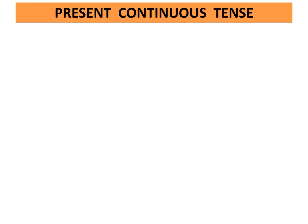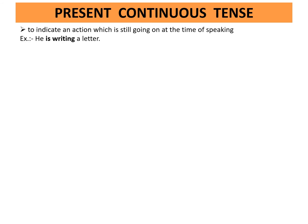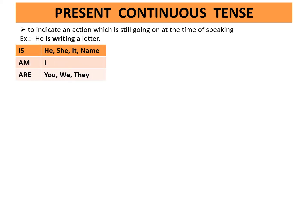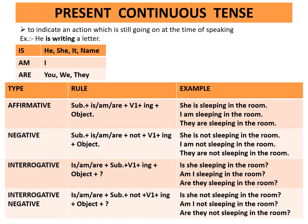Present continuous tense indicates an action which is still going on at the time of speaking. Example: He is writing a letter. Is is used with he, she, it, and names. Am is used with I. Are is used with you, we, they. Affirmative rule: subject plus is or am or are plus first form of the verb plus ing plus object.